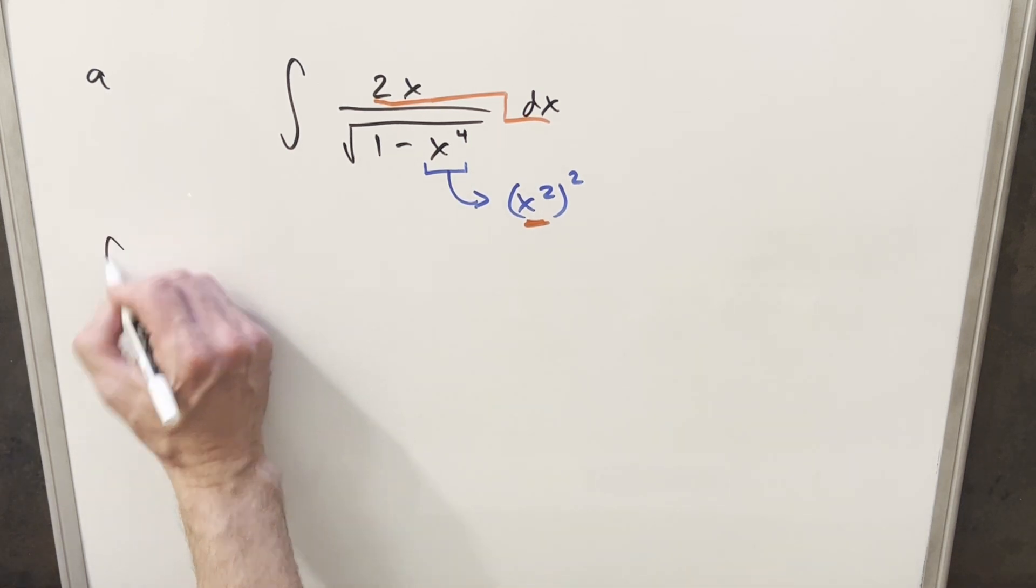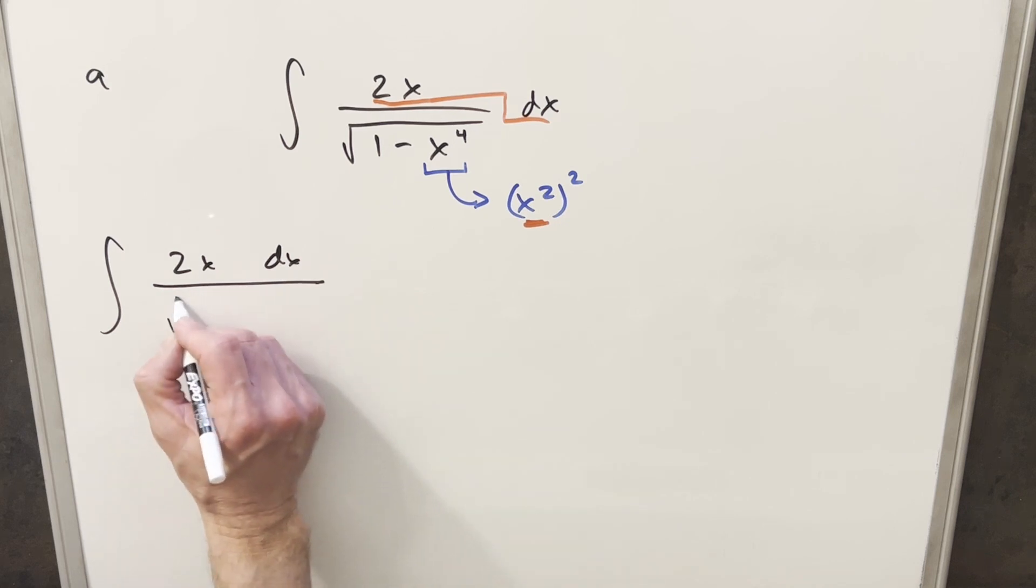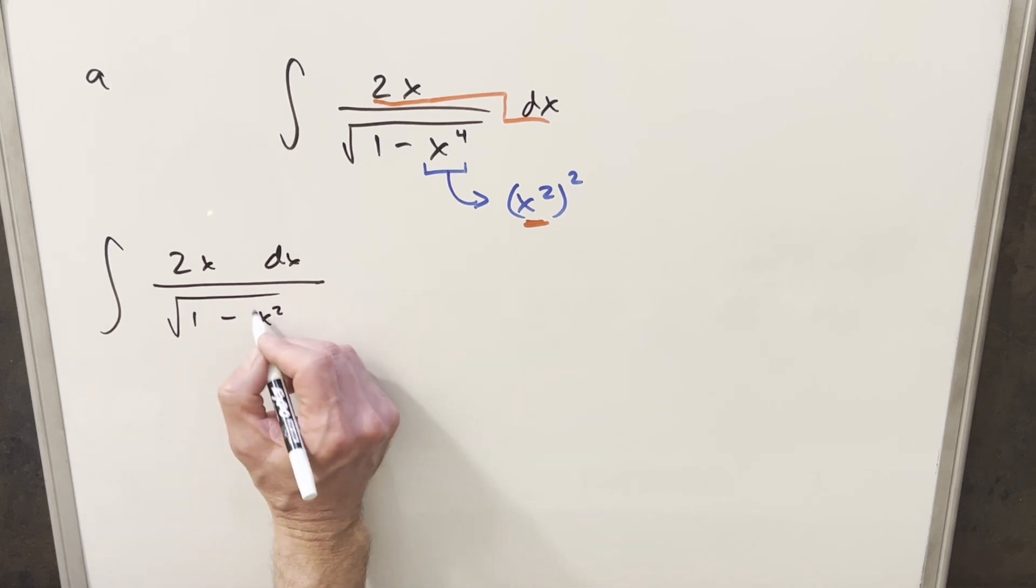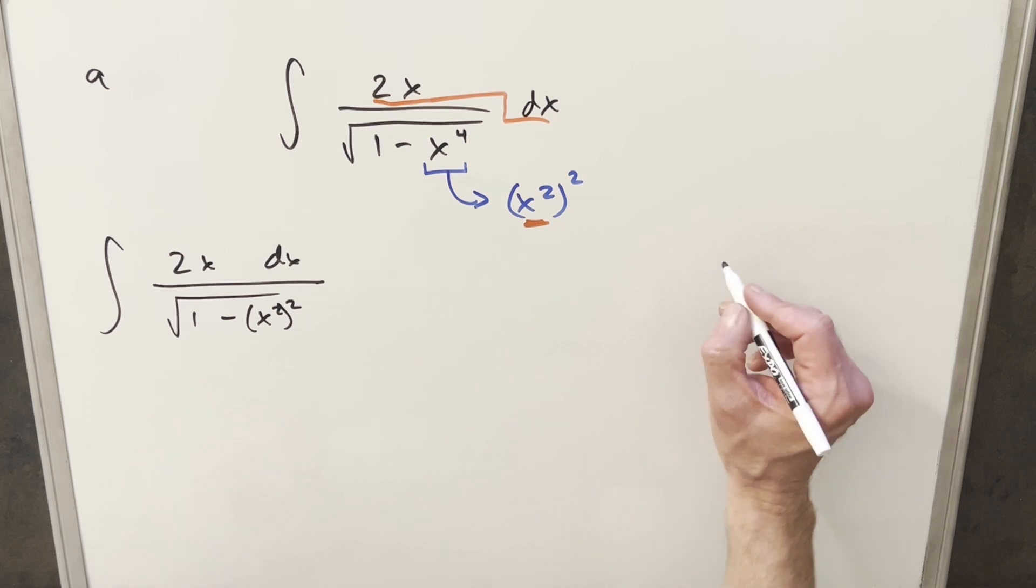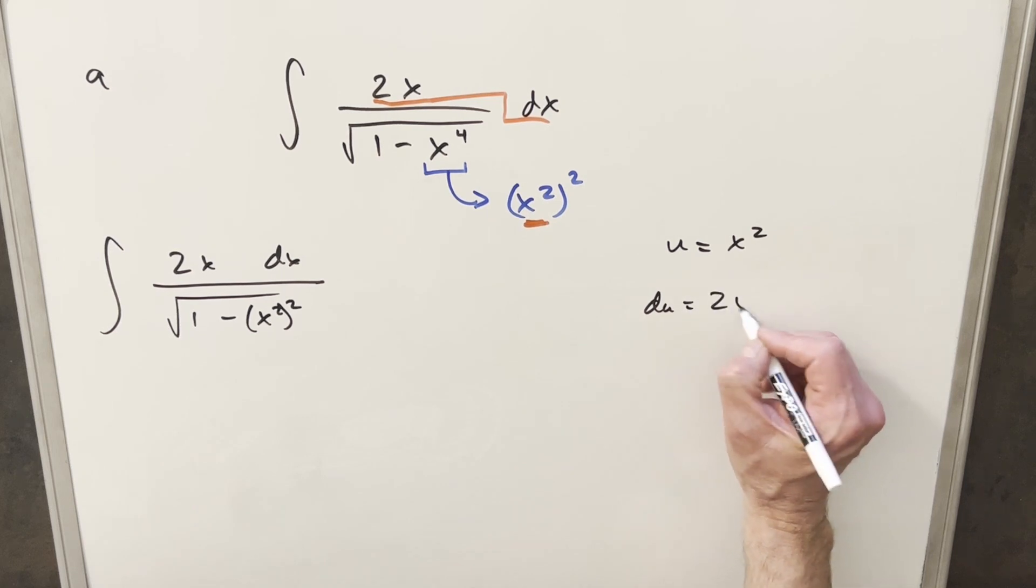Let me just rewrite this. We're going to have 2x dx here, and this is going to become square root 1 minus x squared squared. We'll set up our u substitution. We're going to have u equal to x squared, and du is just going to be 2x dx.